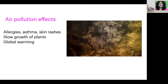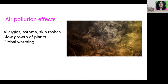The effects of air pollution include allergies like asthma and skin rashes. It slows the growth of plants because plants need to take in carbon dioxide and emit out oxygen, and the ratio they need is less than what is given to them in a contaminated air atmosphere. Global warming also happens because of a lot of carbon dioxide emitted as a result of air pollution.